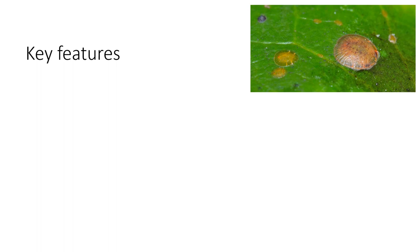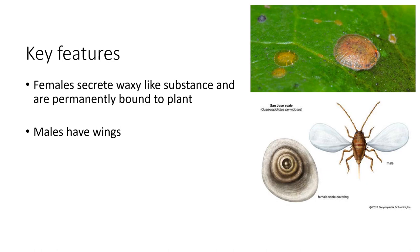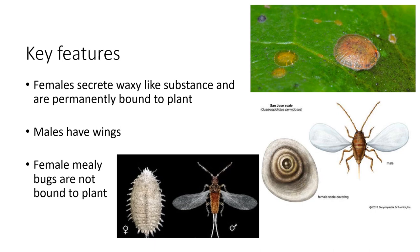Key features of scale insects: females secrete a waxy substance and are permanently bound to a plant, while males have wings. In the middle picture, you can see a male scale insect on the right with wings and a female on the left with no wings. Female mealybugs, however, are not bound to plants — the female mealybug can move around, though the male mealybug still has wings and the female does not.